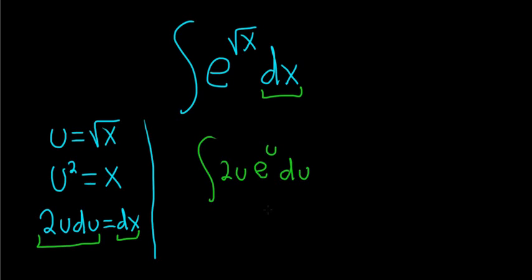So the easiest way to do that is with something called tabular integration. Tabular integration can be used when after repeated differentiation, one of the pieces is eventually 0. In this case, 2u. If we differentiate that, we get 2. If we differentiate that, we get 0.